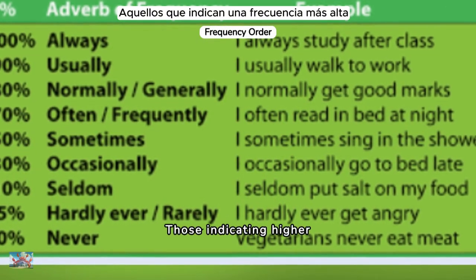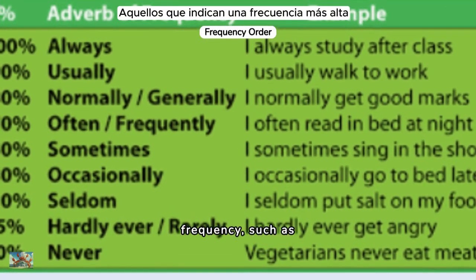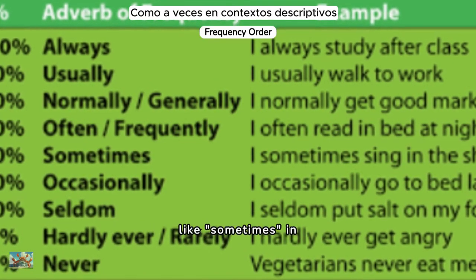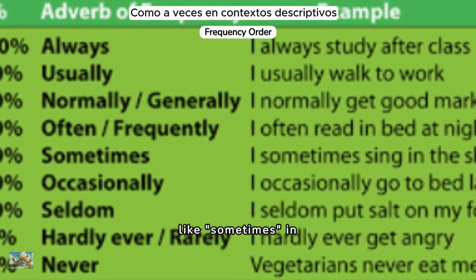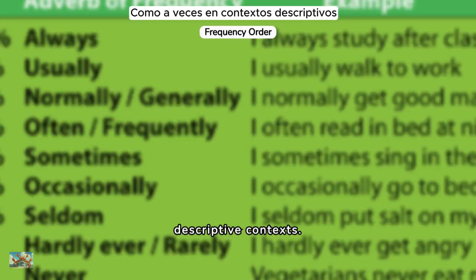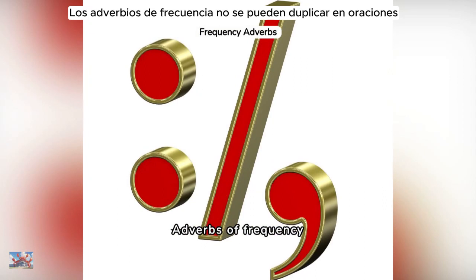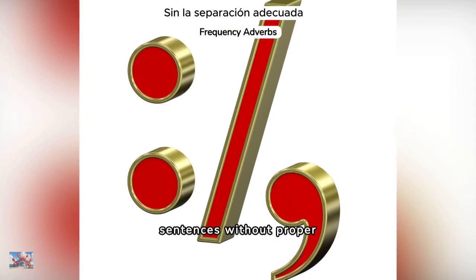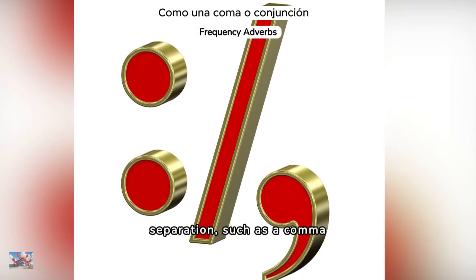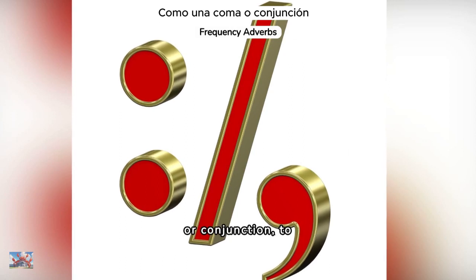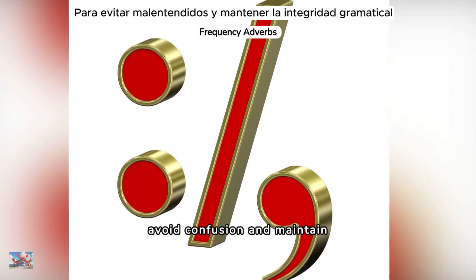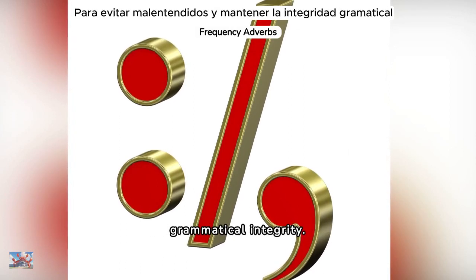Those indicating higher frequency, such as 'always,' should precede others like 'sometimes' in descriptive contexts. Adverbs of frequency cannot be doubled up in sentences without proper separation, such as a comma or conjunction, to avoid confusion and maintain grammatical integrity.